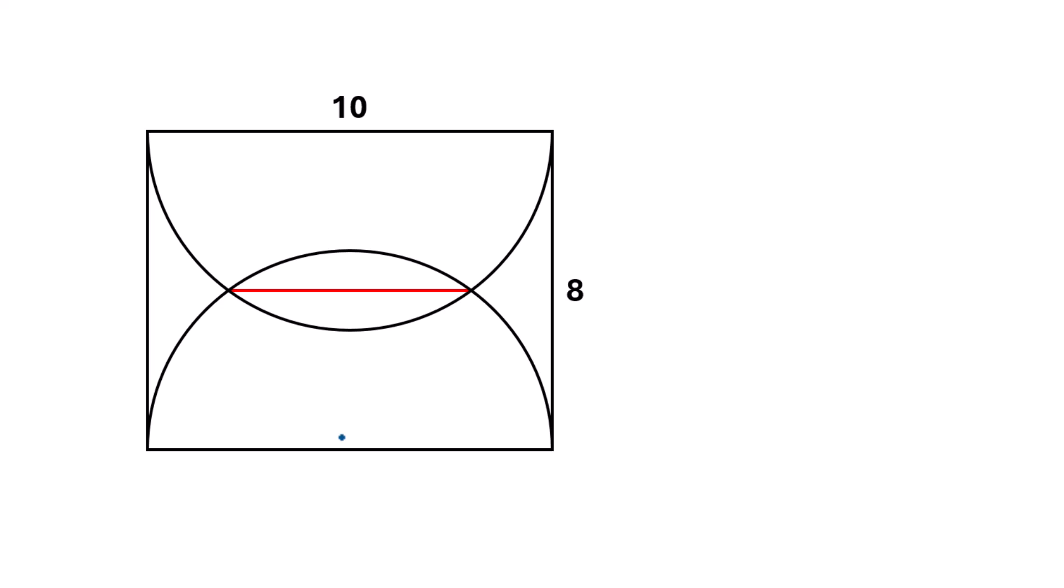At first, consider this point as the center of this semicircle. As the total length of this rectangle is 10 units, it will divide into two equal parts, so this length will be 5 units and this will also be 5 units.